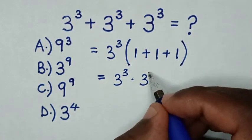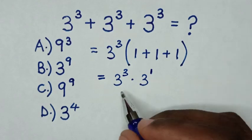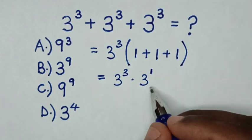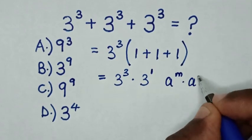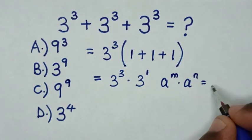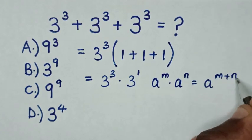Then this 3 is same as 3 power 1. Now, in here is multiplication of exponent with same base of 3, so we'll apply the rule A power of M times A power of N is equal to A power of M plus N.